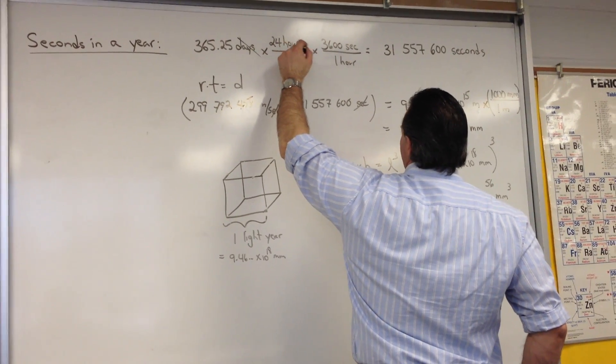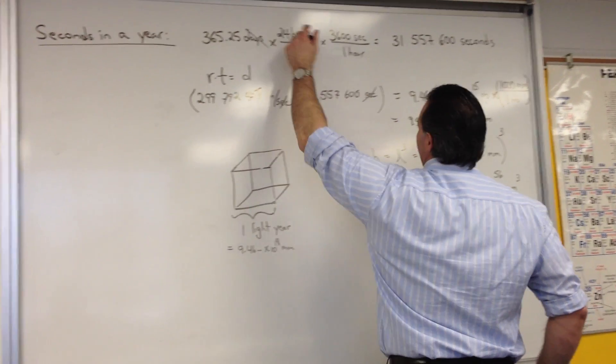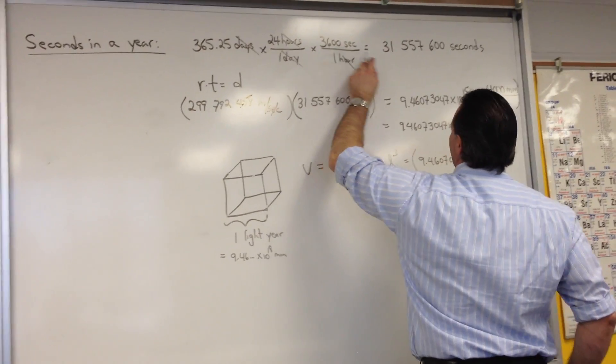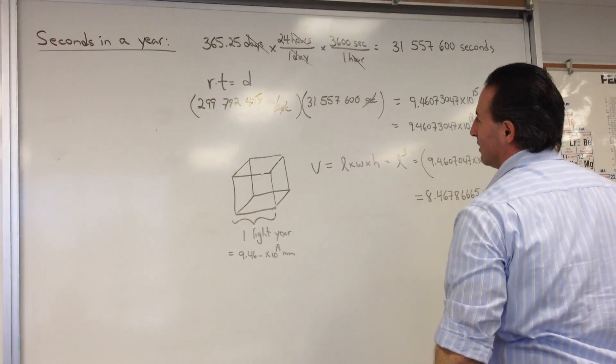I want to cancel hours next, so I'm going to put 3600 seconds per one hour. That allows me to cancel hours. The final answer is going to be 31 million seconds in a year.